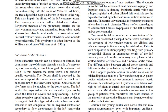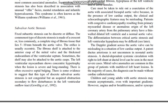Care must be taken to rule out coarctation of the aorta with associated bicuspid aortic valve because, in the presence of low cardiac output, the clinical and echocardiographic features may be misleading. Patients with congestive cardiomyopathy resulting from primary myocardial disease or anomalous origin of the left coronary artery from the pulmonary artery have a thin-walled, dilated left ventricle and a normal aortic valve. The differentiation between critical aortic stenosis and left ventricular hypoplasia may be difficult; the Doppler gradient across the aortic valve can be misleading in a situation of low cardiac output.